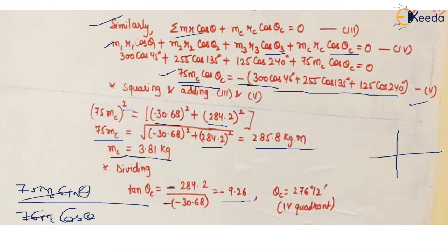In this case the sine factor is negative and the cos factor is positive. So in what quadrant should it lie? It should lie in the fourth quadrant. So we can easily find that this is the angle required to place the counter mass in order to balance the system statically.